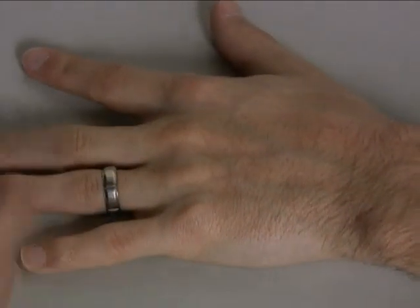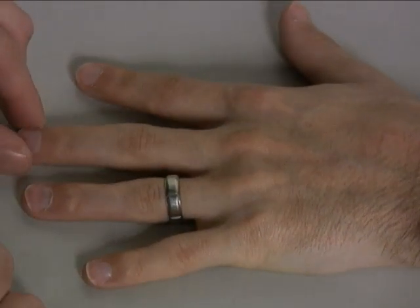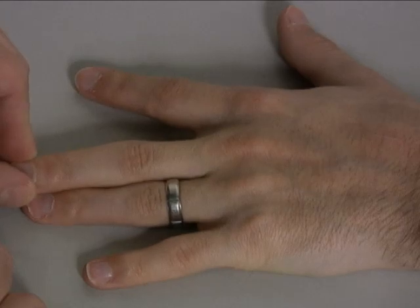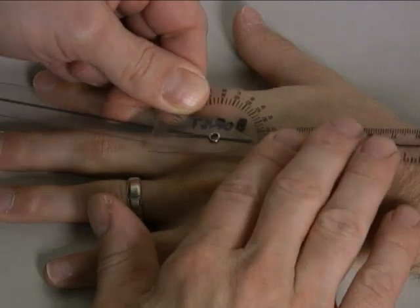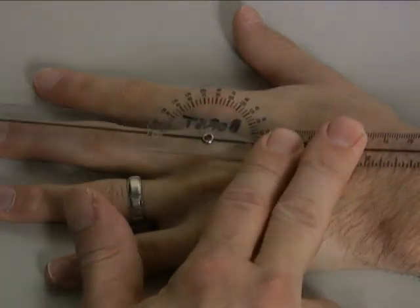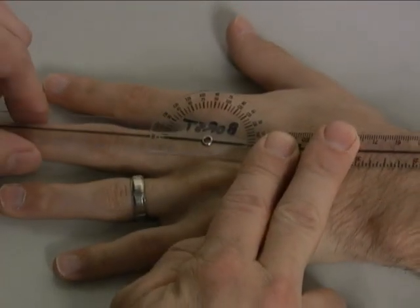The middle finger is a special case because it can abduct in both directions. So the middle finger, again, you would palpate and line up your stationary arm with that metacarpal, and you would come up with a measurement